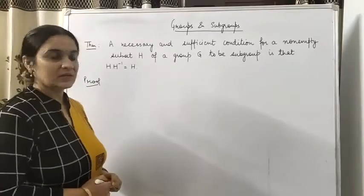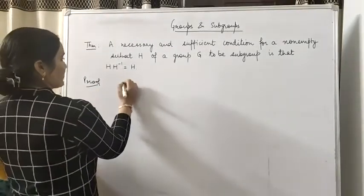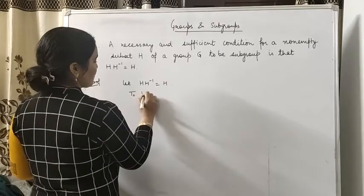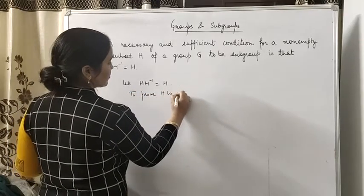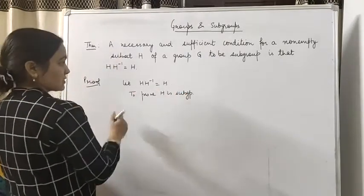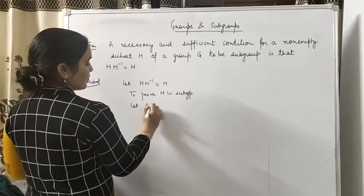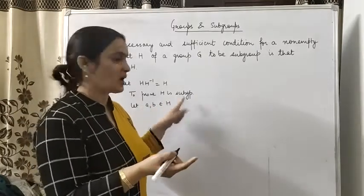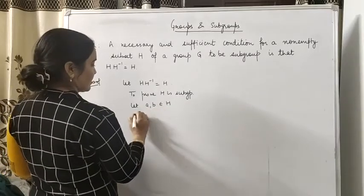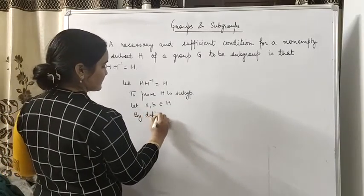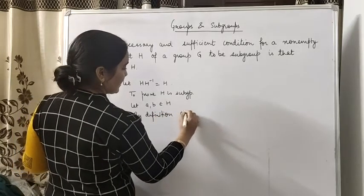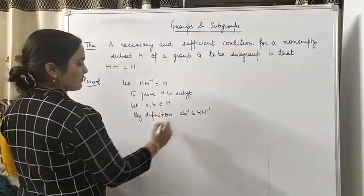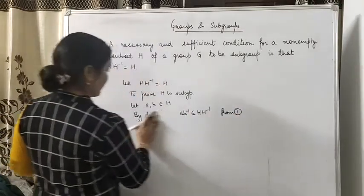Next part — second part. Given: let H·H⁻¹ = H. And to prove: H is a subgroup. Second part में यह proof करना है। So let A, B belongs to H. H को subgroup prove करने के लिए A·B⁻¹ H में होना चाहिए। तो A, B H में हैं, तो by definition A·B⁻¹ belongs to H·H⁻¹.